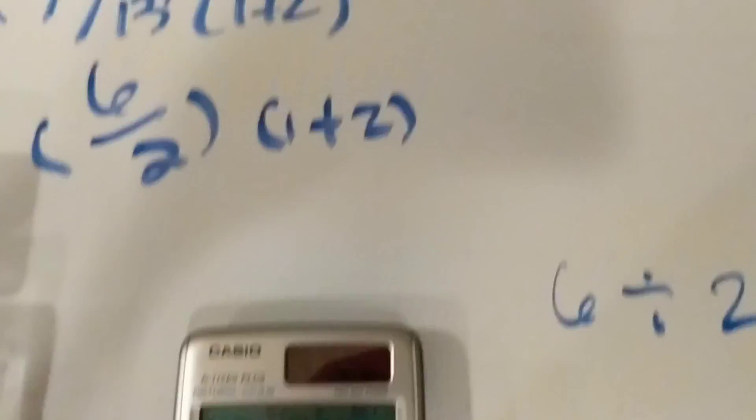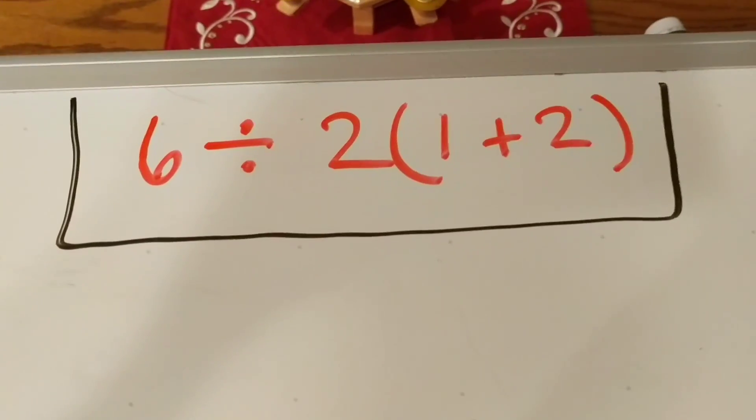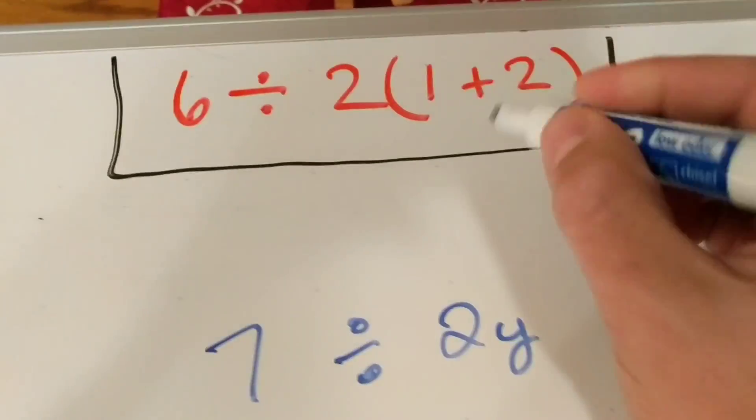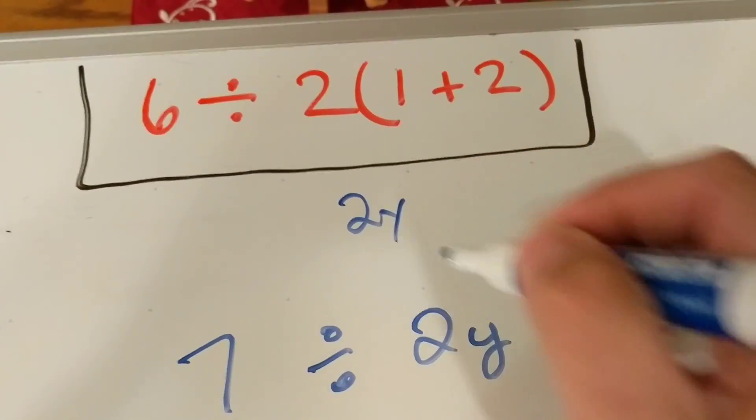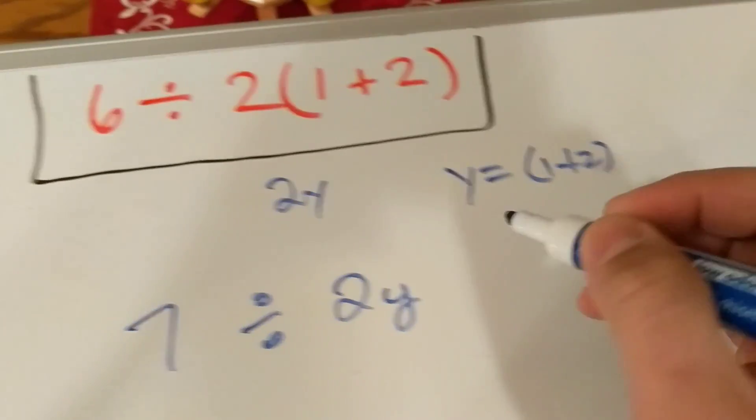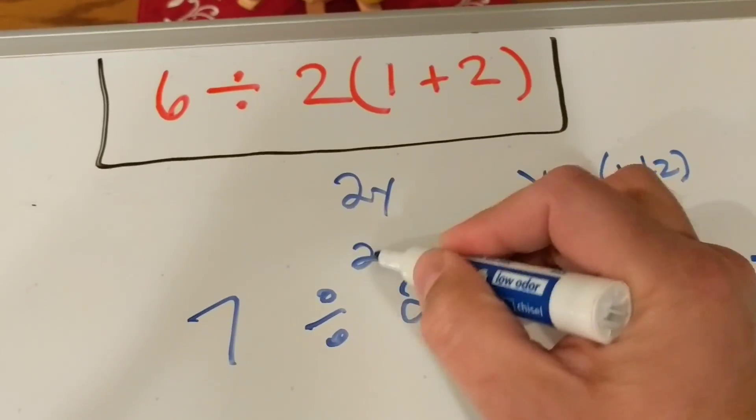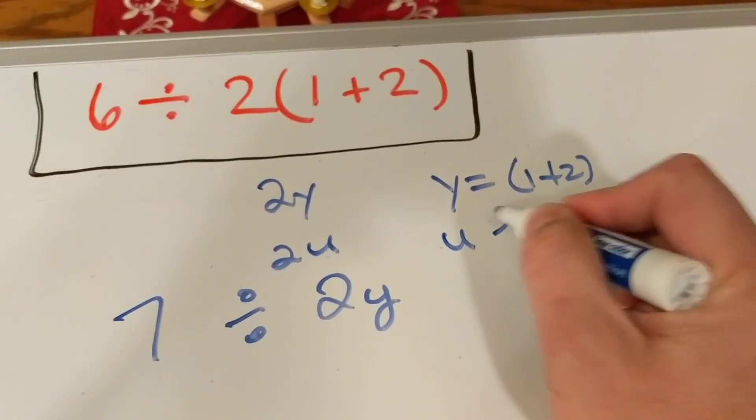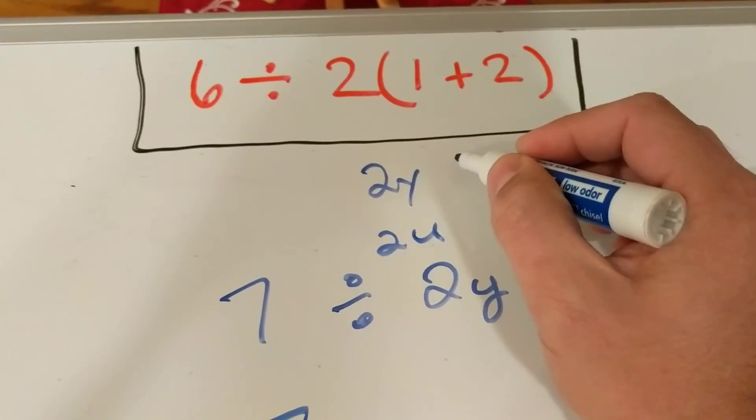So, the plain fact of the matter is that equals 1. Because that's no different than saying 2y, and y equals 1 plus 2. That's no different than saying 2u, and u equals 1 plus 2.